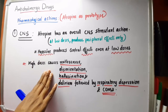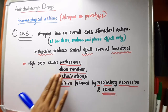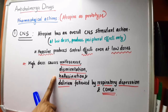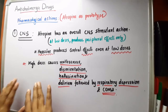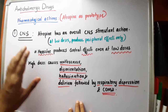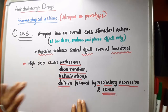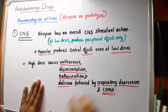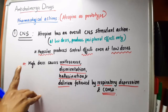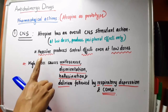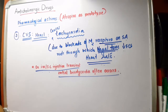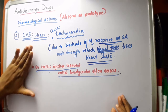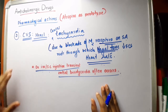High doses of atropine can cause side effects such as restlessness, disorientation, hallucination, and delirium, followed by respiratory depression and coma. Hyoscine is the drug that can produce central effects even at low doses. Hyoscine is also used for its anti-motion sickness property to treat motion sickness.